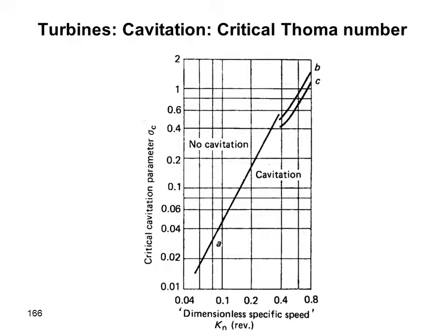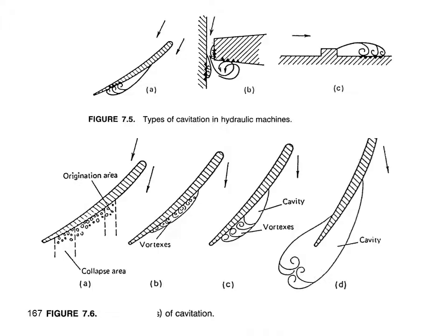The cavitation factor sigma is a function of specific speed — as specific speed increases, the cavitation factor increases. This is taken from references on turbines; designers must determine their turbine's specific speed and then find the corresponding sigma to position the turbine safely without cavitation.